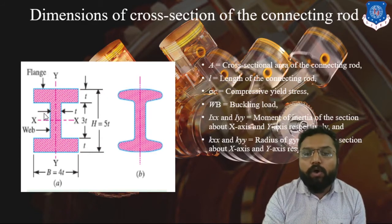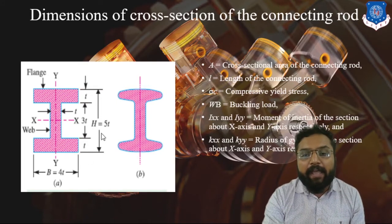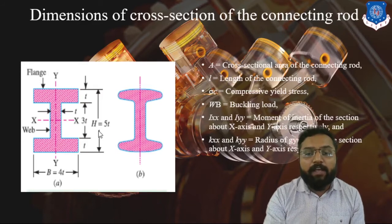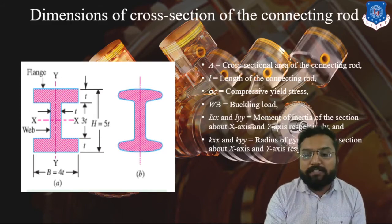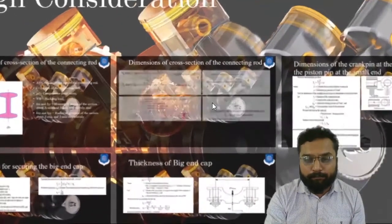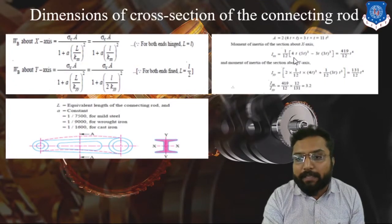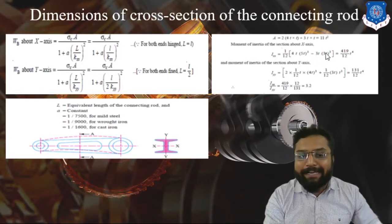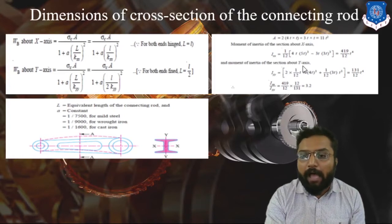To find the moment of inertia from the horizontal plane, we consider the I-section as a full rectangle and subtract the two smaller rectangles. The moment of inertia for the total rectangle is BD³/12, where B is 4T and D is 5T. So it is 4T × (5T)³ / 12 minus the two subtracted cross-section areas: 3T × (3T)³. This gives IXX = 419/12 × T⁴.